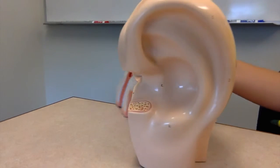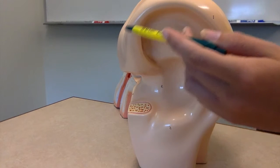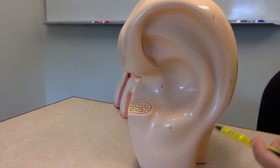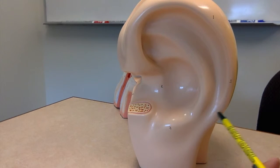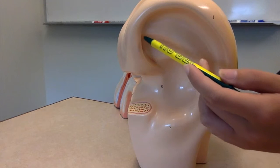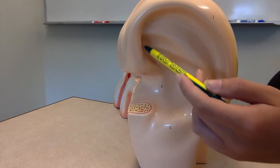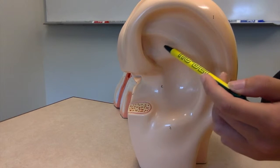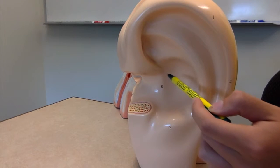Let's start on the outside. First, we have the helix, which is the outermost part of the ear. Next, we have the scaphoid fossa, the crura of the anti-helix, the triangular fossa, the cymba concha, the tragus,